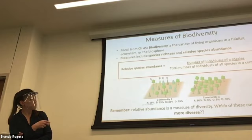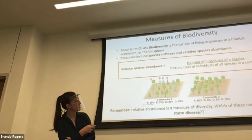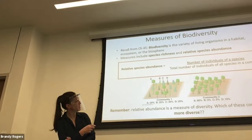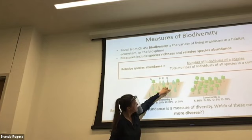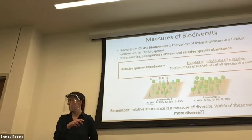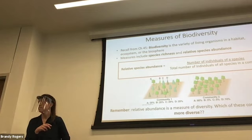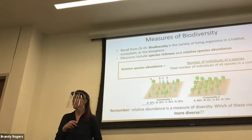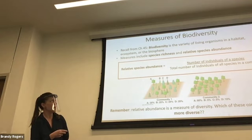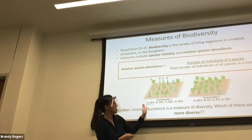In community one we have four species. The total number of individuals is 20 trees. So how many of those 20 are species A? Five out of 20, which gives us 25%. That is your relative abundance of species A. The same for B, C, and D — each is 25%. So we have 25% relative species abundance for each species in this community.